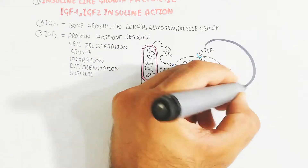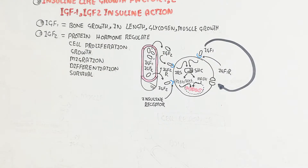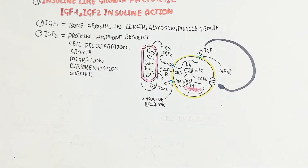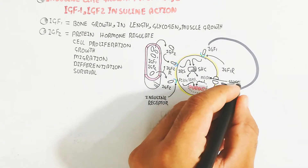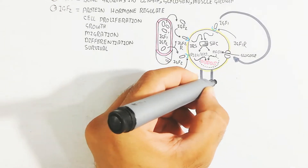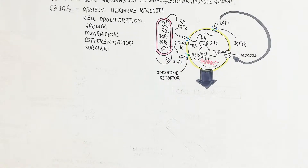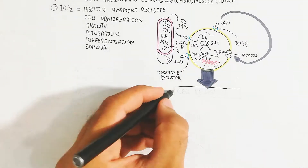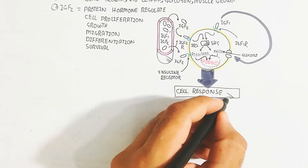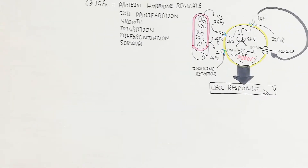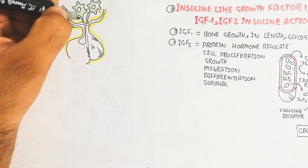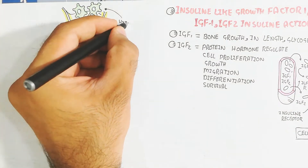This stimulates the insulin receptor substrate (IRS) and ShC, which activate the PI3K/Akt pathway. The MAPK pathway stimulates DNA to produce protein through translation. Glucose is metabolized and flows into the cell via glucose channels, leading to the cell response.